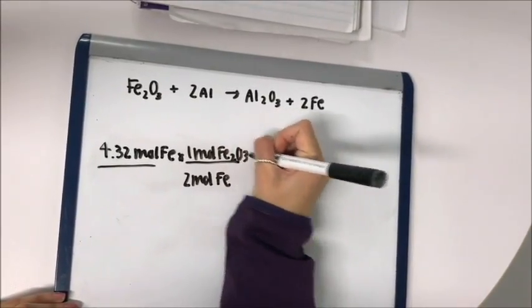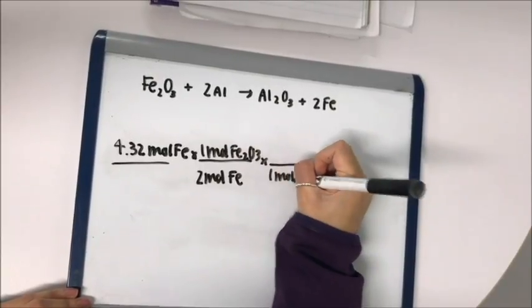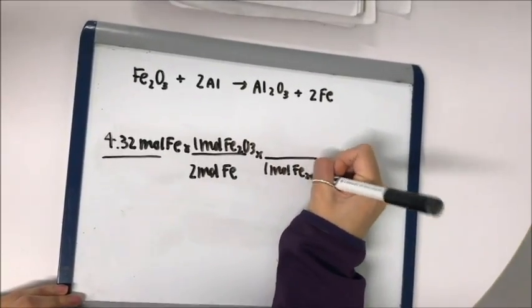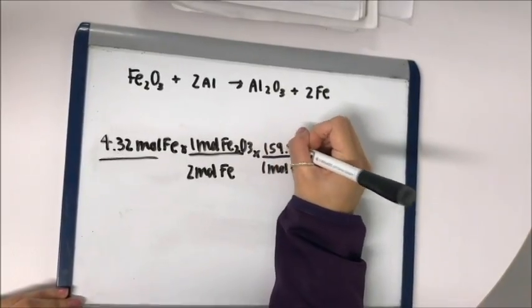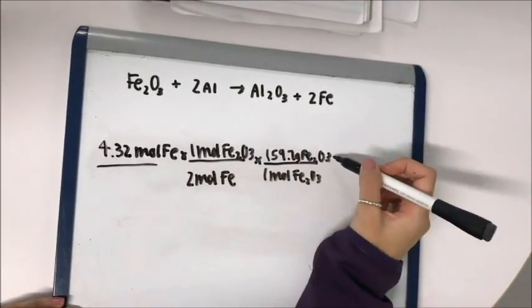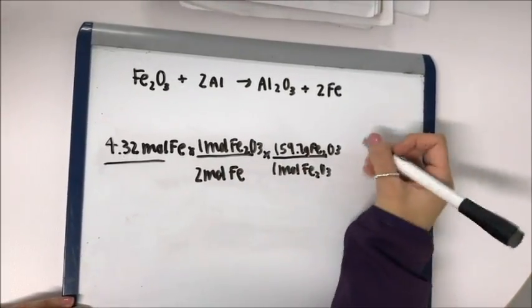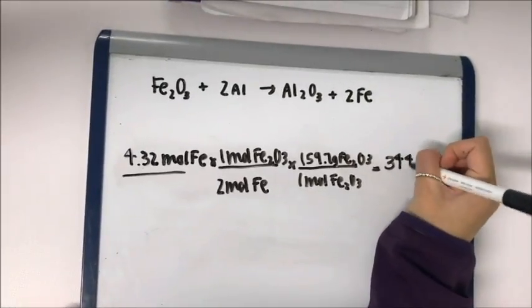Multiply the molar mass of Fe2O3 which is 159.7 grams Fe2O3, then divide by 1 mole of Fe2O3 which equals 344.9 grams of Fe2O3, and with sig figs it equals 345 grams of Fe2O3.